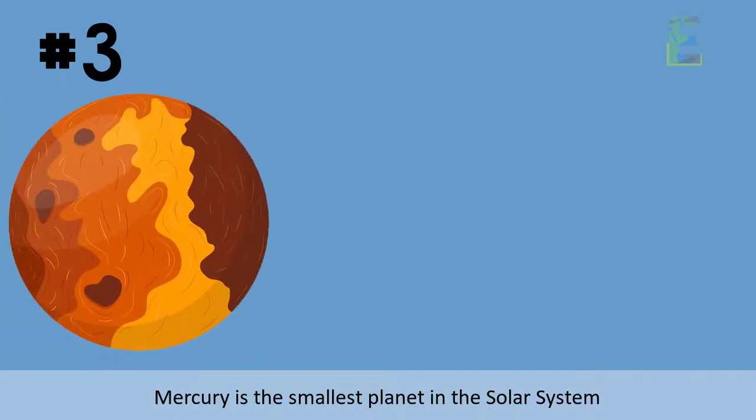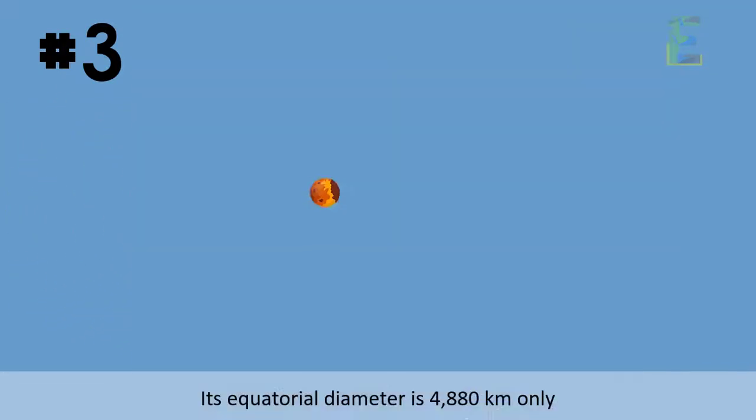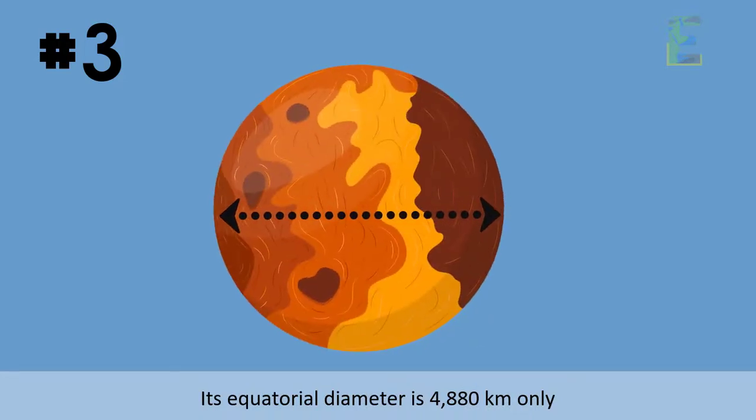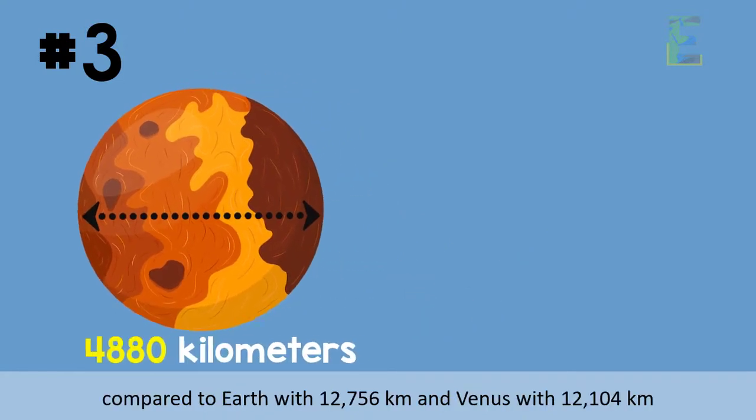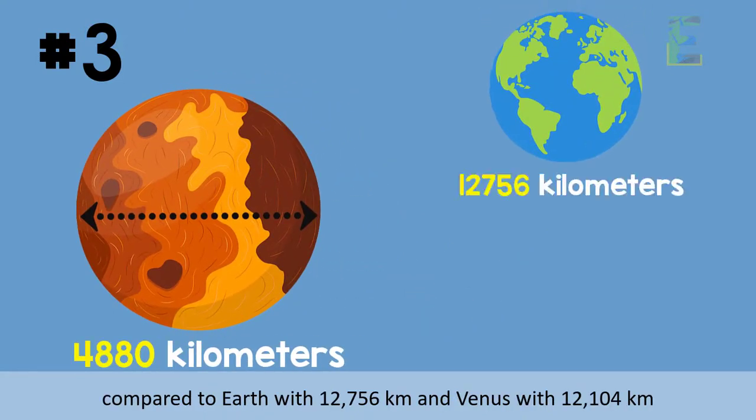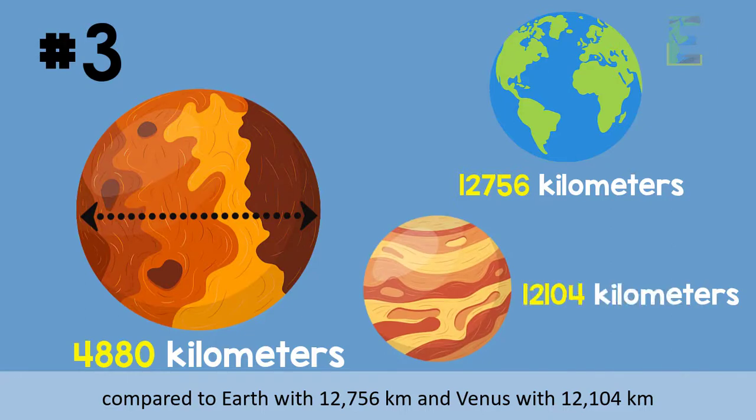Number 3. Mercury is the smallest planet in the solar system. Its equatorial diameter is 4,880 kilometers only compared to Earth with 12,756 kilometers and Venus with 12,104 kilometers.